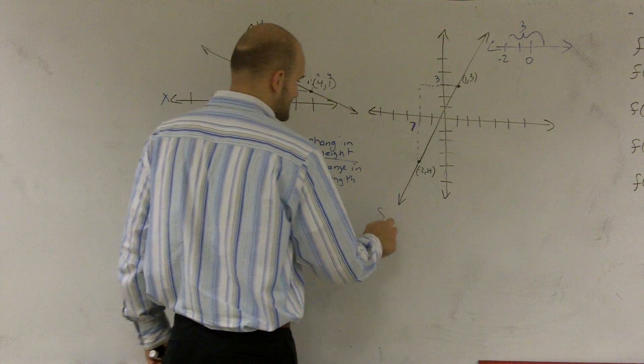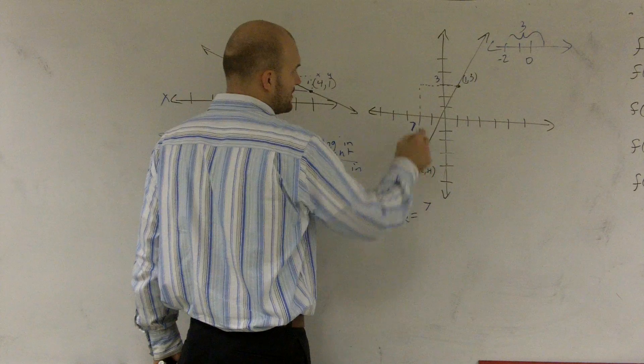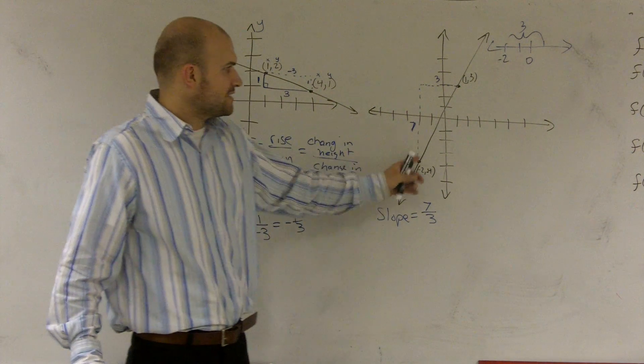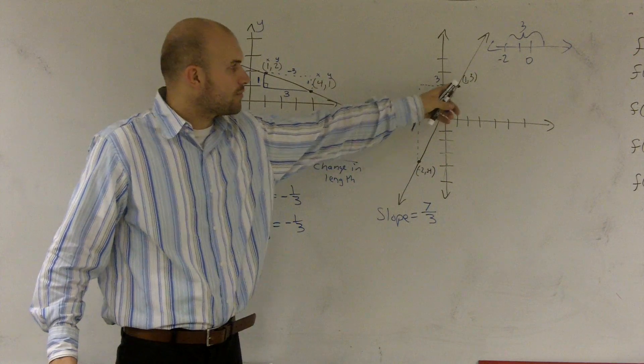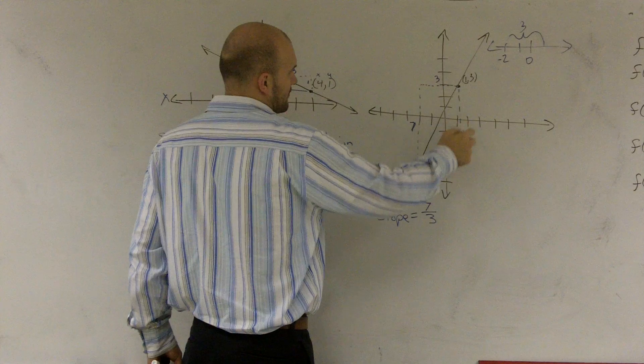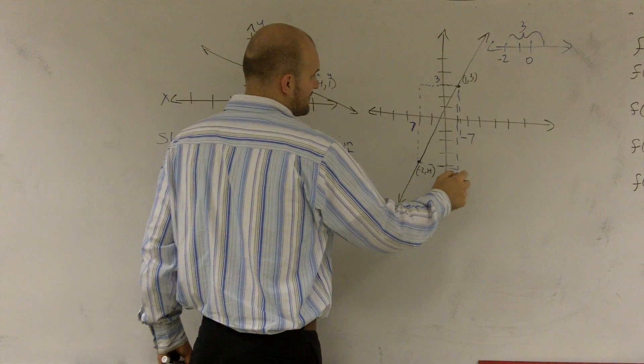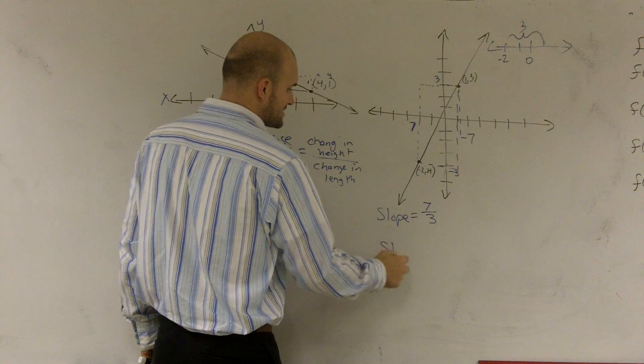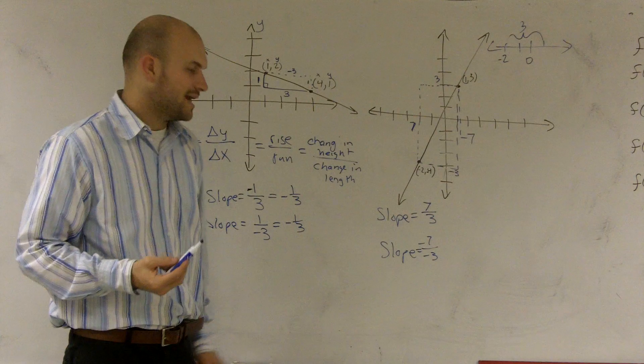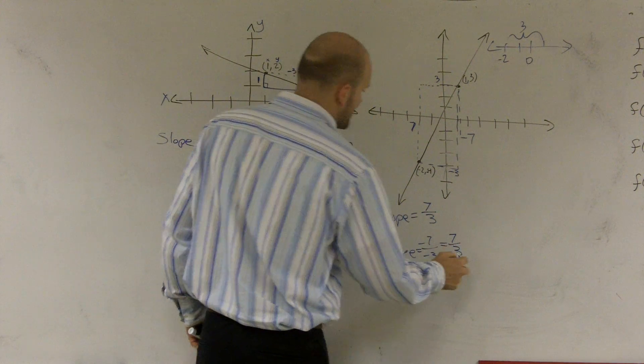So therefore, I can write my slope. In this problem, since I went up is a positive seven, over would be a positive three. Now, let's say you read it from left to right. Let's say you read it from right to left. Well, you can also say going to the left three, down seven. You can say down seven, to the left three. So therefore, my slope would be a negative seven over a negative three. Which then is okay, because what you notice is a negative divided by a negative is going to give you a positive seven thirds. So either way, I'm going to get the exact same slope.